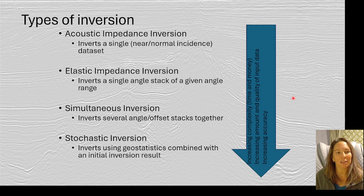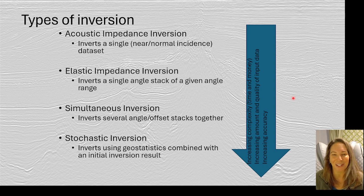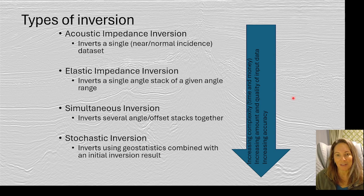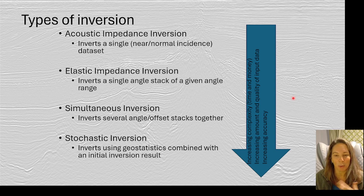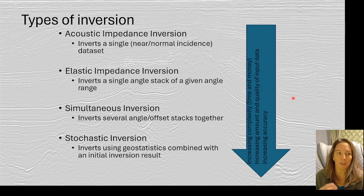Starting simple, we have the acoustic impedance inversion, which uses single or near-offset data. Moving up in complexity, there's the elastic impedance inversion, which works with angle stacks. Then we have the simultaneous inversion, which can handle multiple angle stacks or gathers at once. And then there's stochastic inversion, which brings in a lot more geostatistics. Working down this list, we're trading increased complexity, time, and cost for potentially better results and better understanding of our reservoir — so choose the inversion that's right for your project.